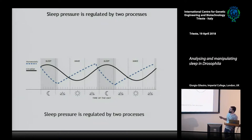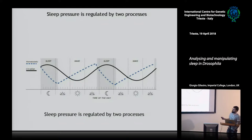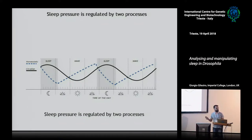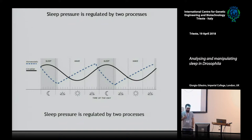According to the two-process model, which was formulated in 1982 by Borbély, sleep is under control of two processes. One is what we call process C, where C stands for circadian, and the other is what we call process S, where S stands for sleep. About circadian, you might know this — we know a lot, and we already touched slightly on this yesterday.